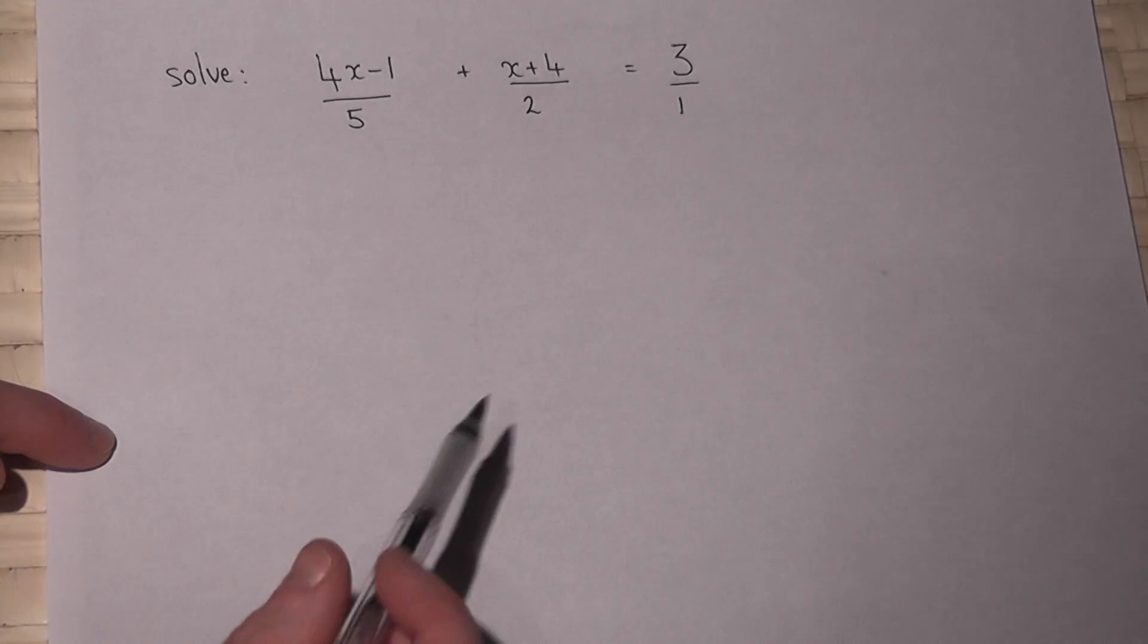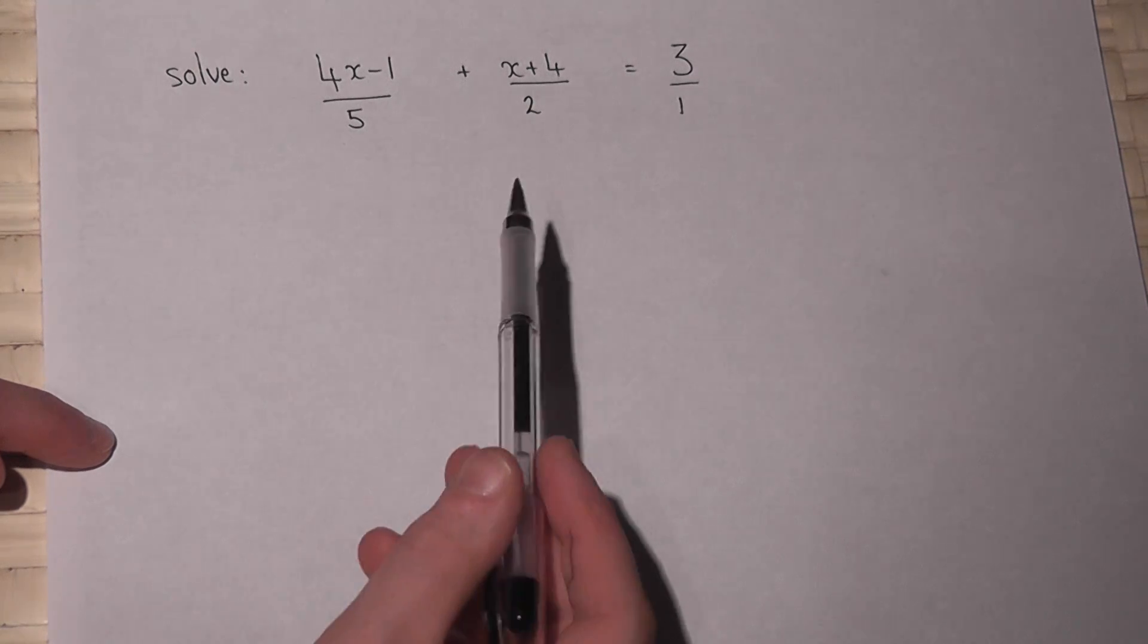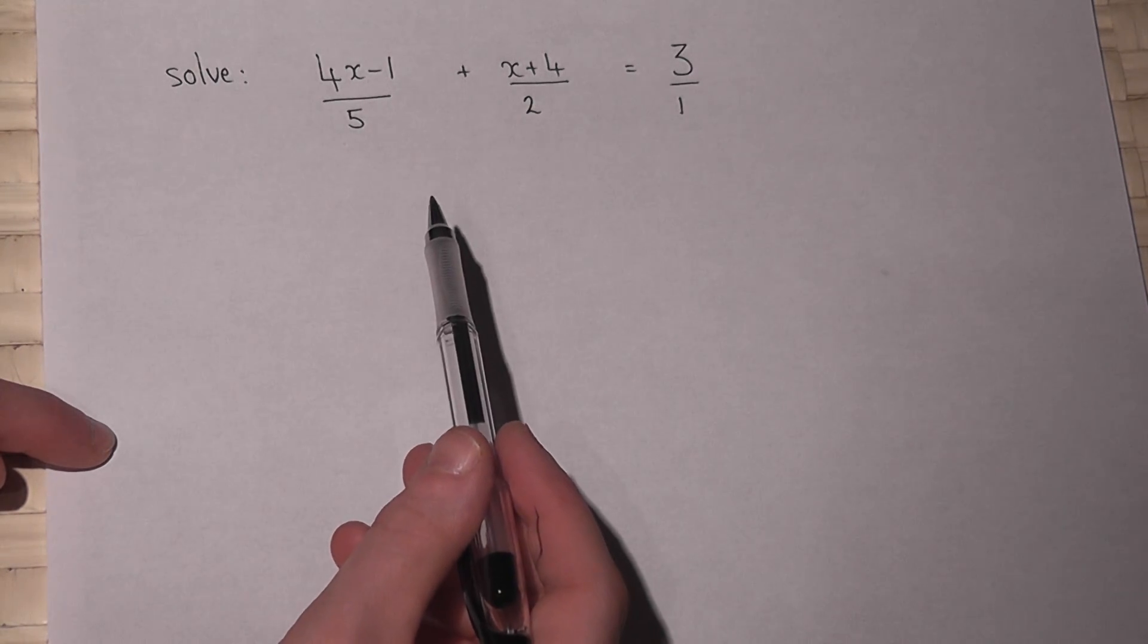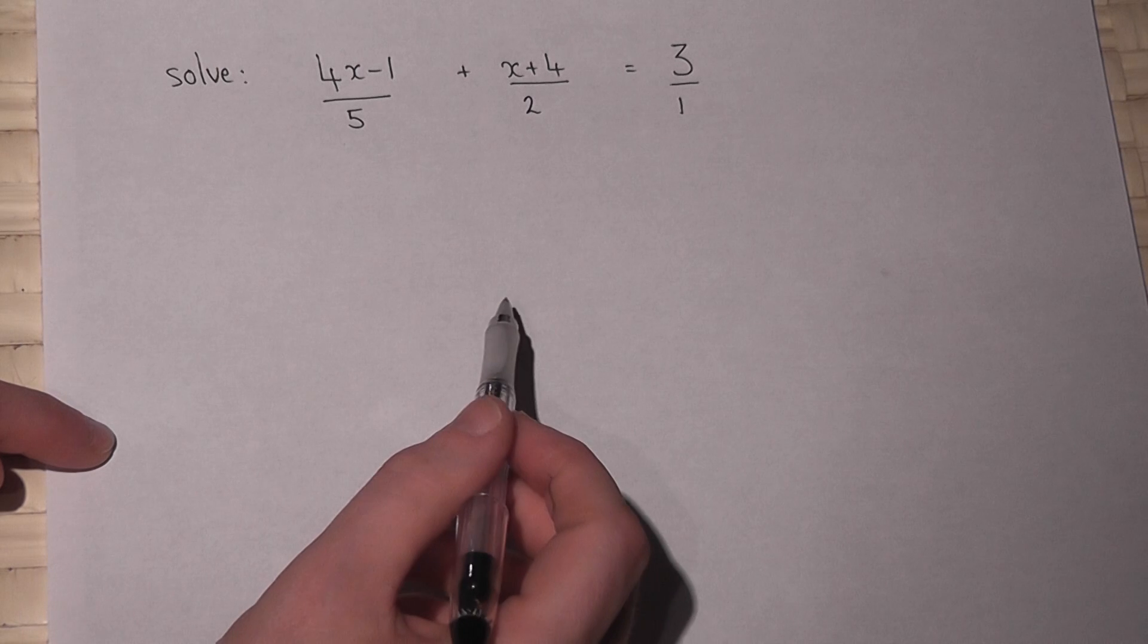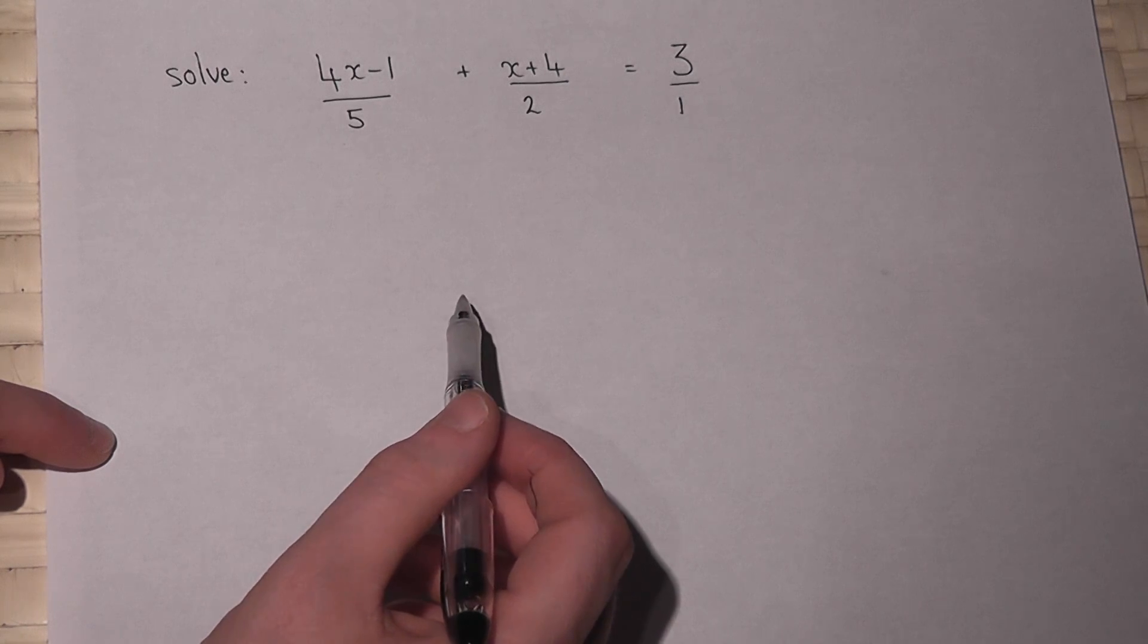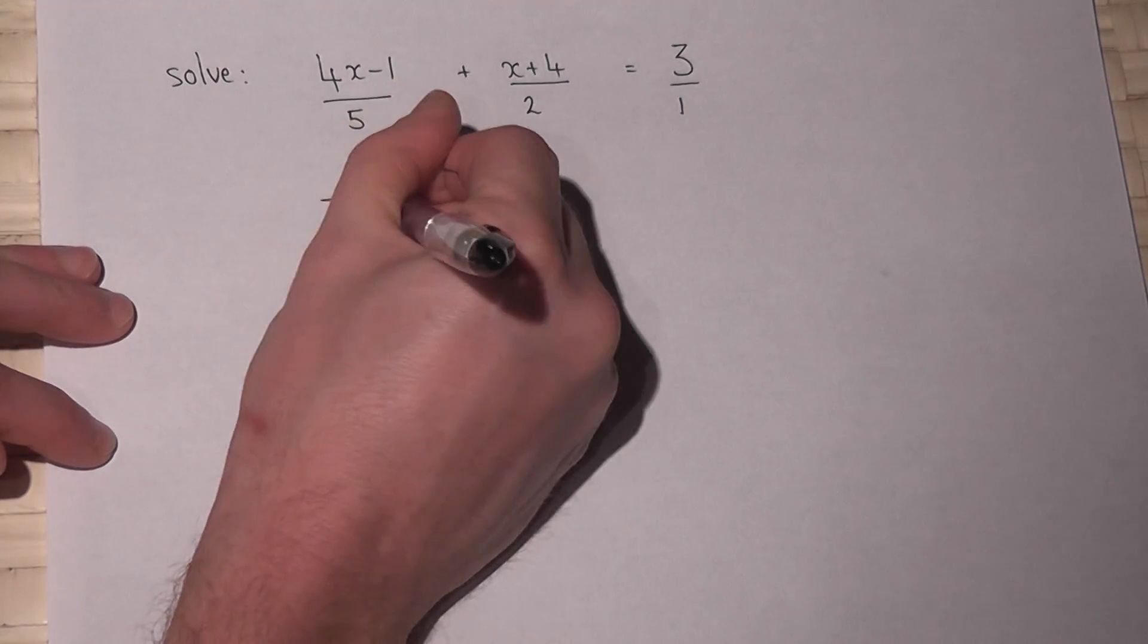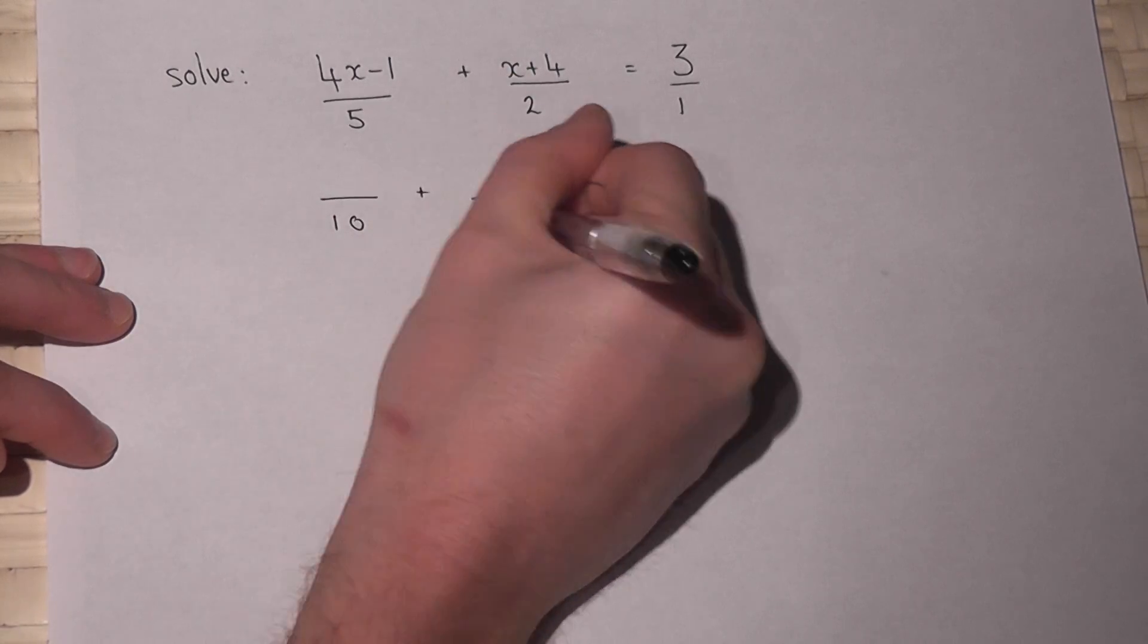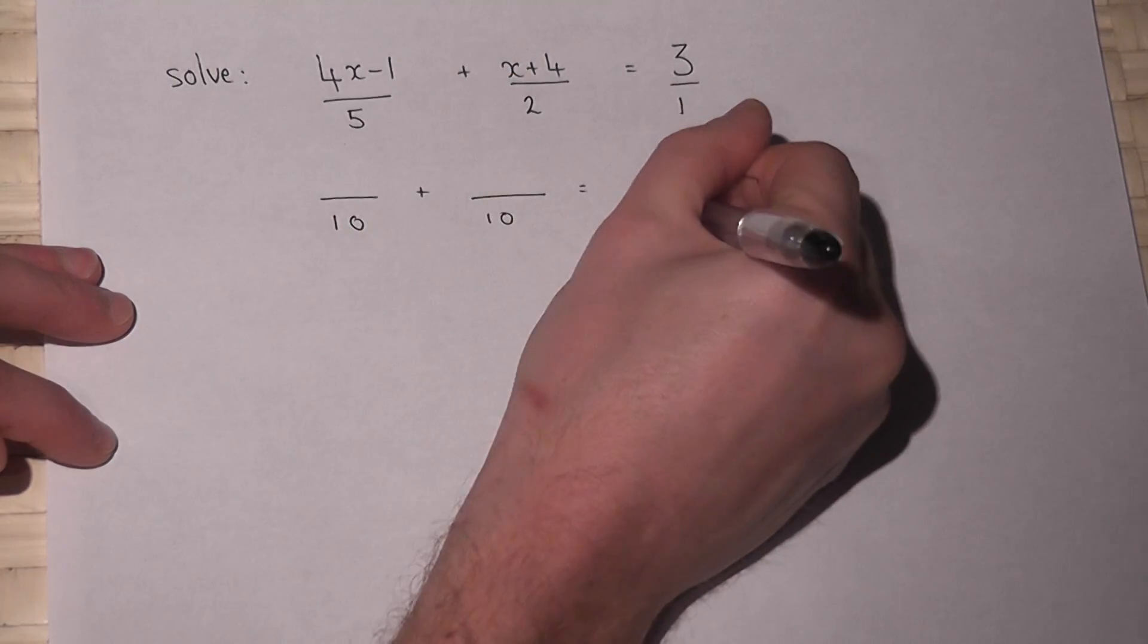We then write all three fractions over the lowest common multiple of 5, 2, and 1. Well, 5, 2, and 1 all go into 10, so over 10, over 10 equals over 10.